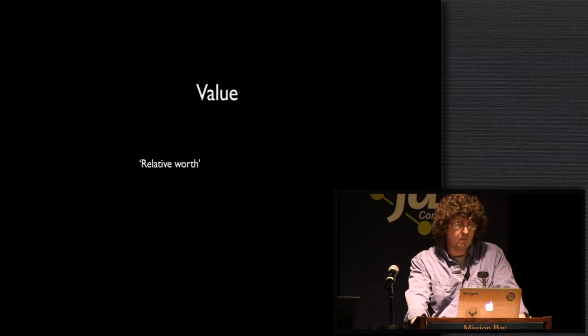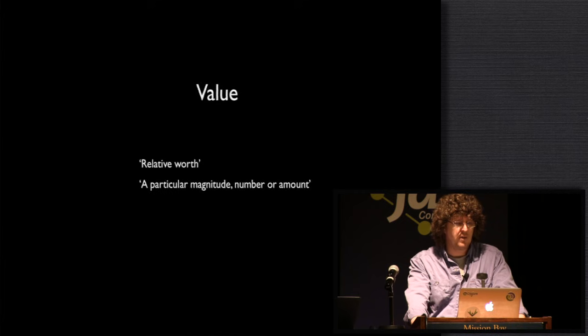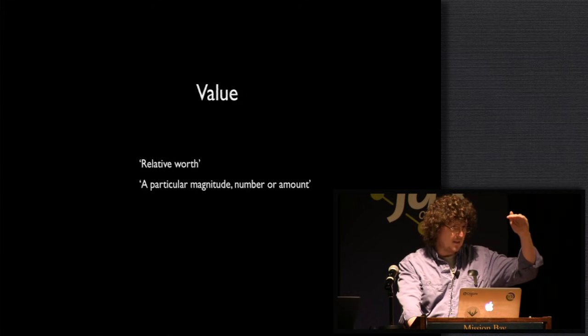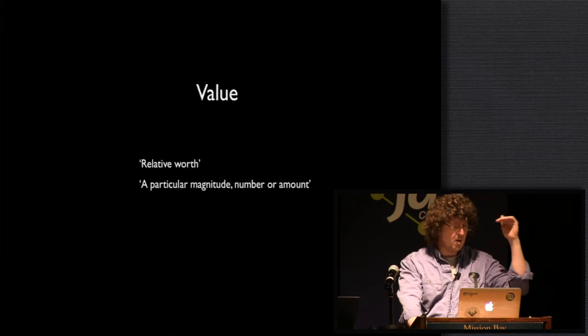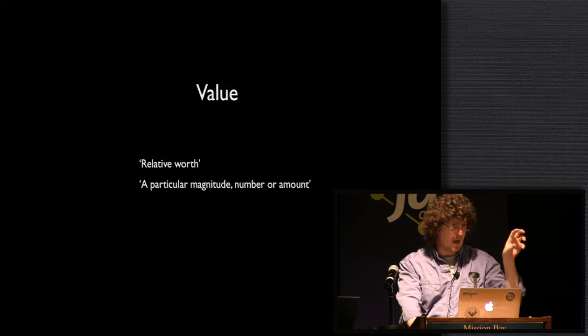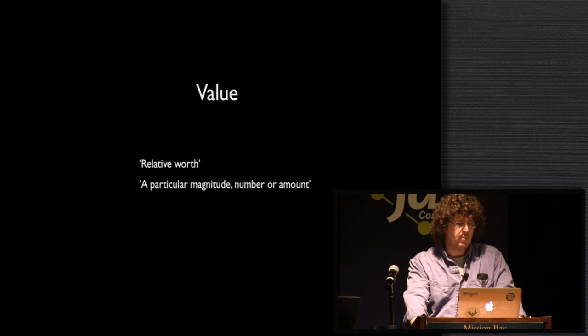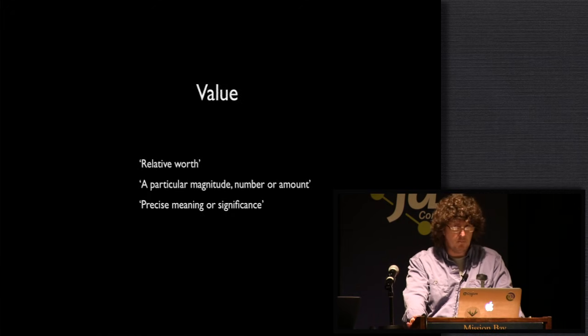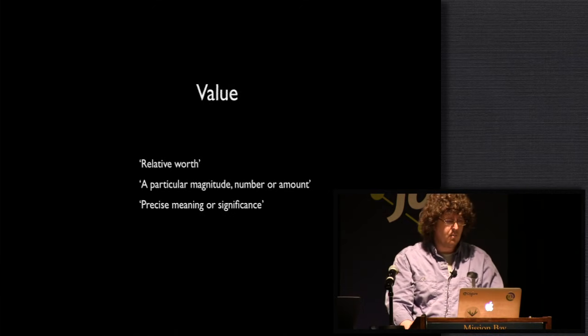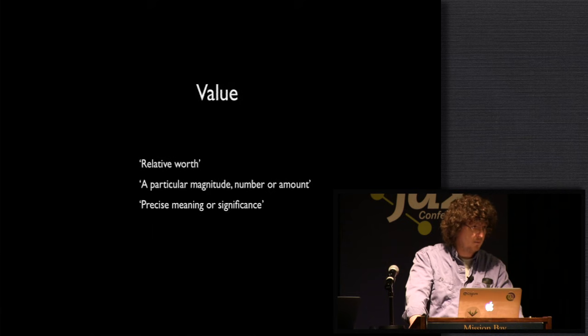So this talk is about values — another term we should define, back to the dictionary. There are some very interesting definitions for value. First is relative worth, and relative ends up being a very critical aspect of values. The next definition is the one we're probably most familiar with in computers — it's a magnitude, a number, something we use to measure something else. But the bigger notion of value is about meaning, comparability, and relative worth. When you measure something, you have to measure it in terms of something else. There are no absolute measurements.